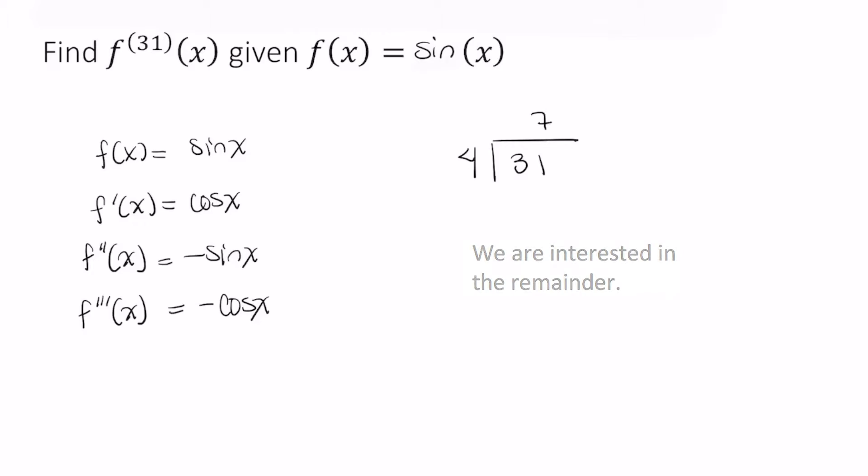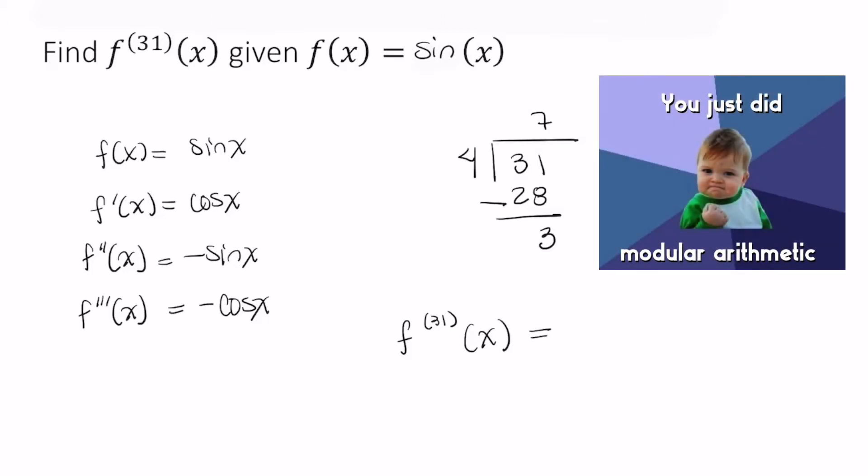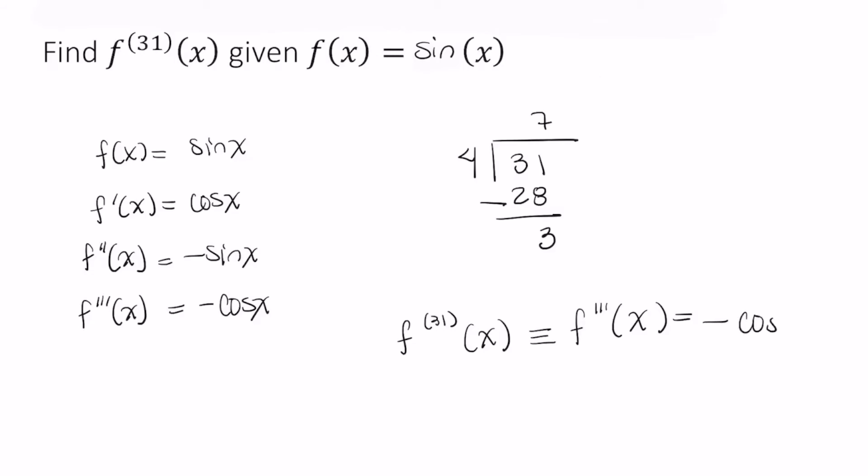4 times 7 equals 28. Subtracting in our long division, we end up with a remainder of 3. So the 31st derivative of this function is equivalent to the third derivative, which is negative cosine x.